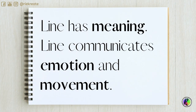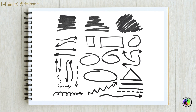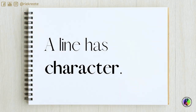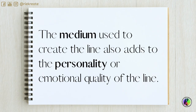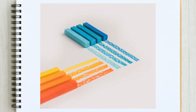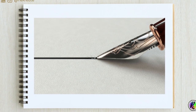Line has meaning. Line communicates emotion and movement. There are many different types of lines because line has many different properties. A line has character — the medium used to create the line also adds to the personality or emotional quality of the line. Different media will create different types of textures and edge qualities.